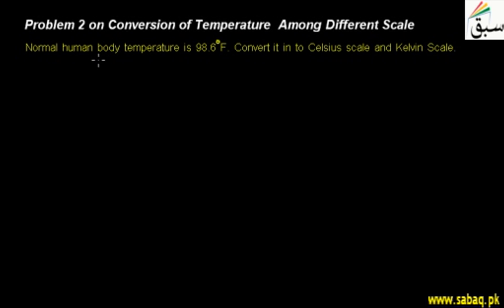Second problem students: solve the conversion of temperature among different scales. We have a statement that normal human body temperature is 98.6 degrees Fahrenheit. Convert it into Celsius scale and Kelvin scale.